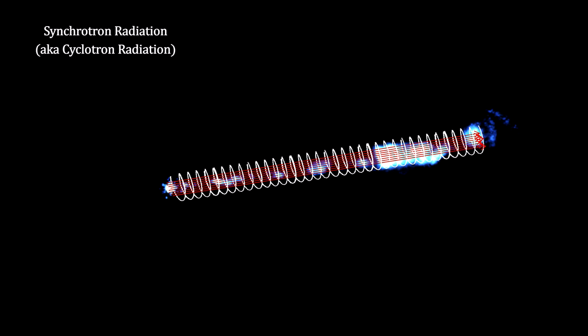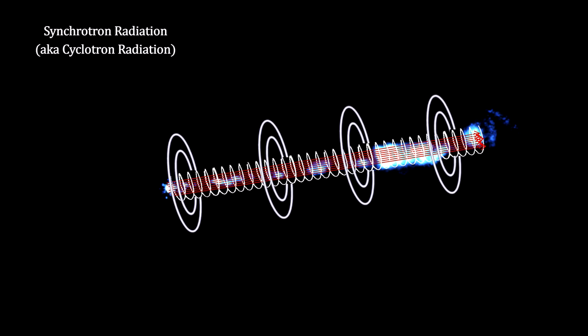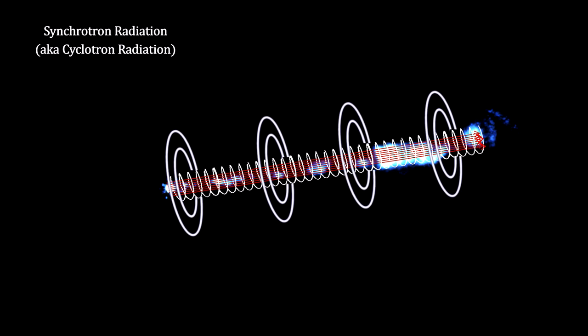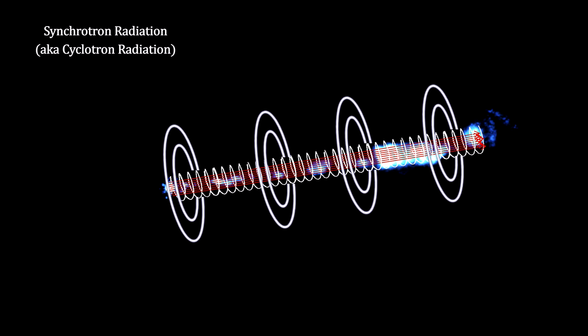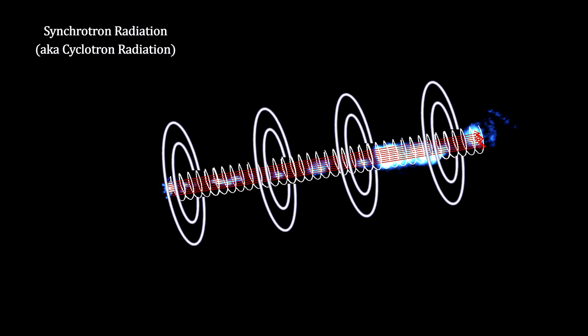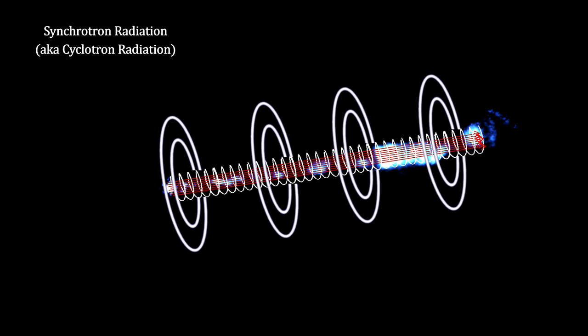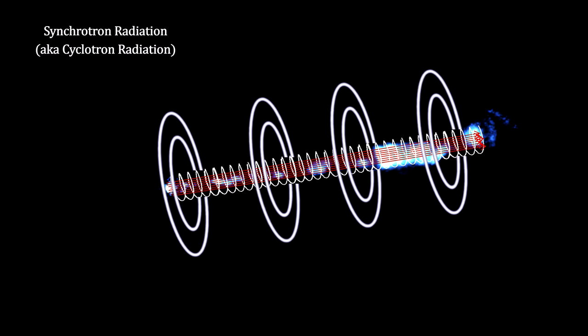The European Space Agency's Integral Gamma Ray Observatory has observed extremely hot matter just a few milliseconds before it would have crossed into the black hole. This lends support for the theory, but just how this is accomplished is not yet understood.